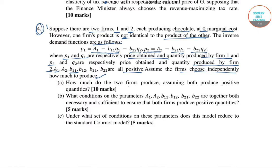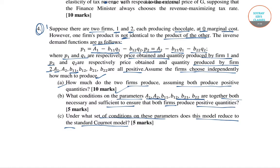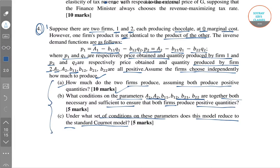We have three sub-questions. First, how much do the two firms produce assuming both produce positive quantities? Second, what condition on parameters A1, A2, B11, B12, B21, B22 are together both necessary and sufficient to ensure both firms produce positive quantities? Third, under what set of conditions does this model reduce to the standard Cournot model?